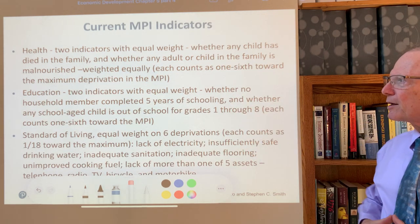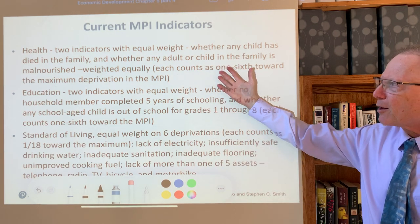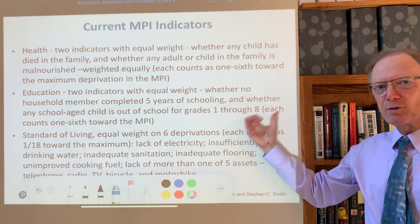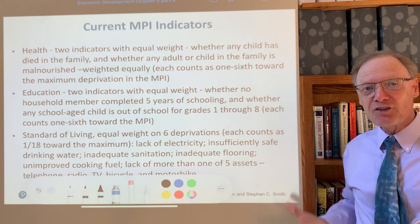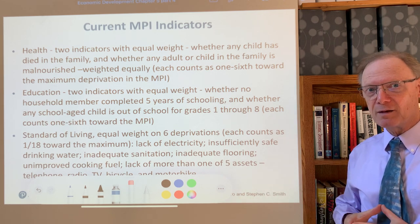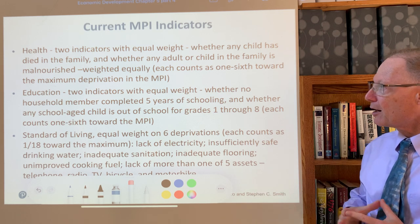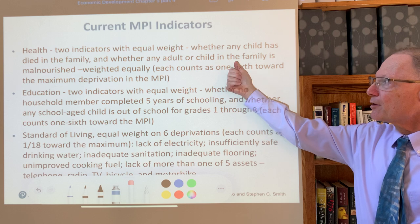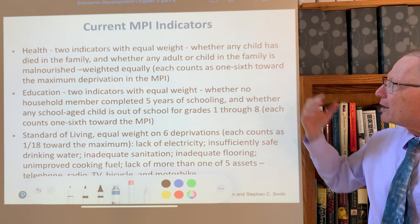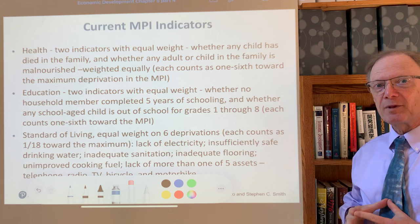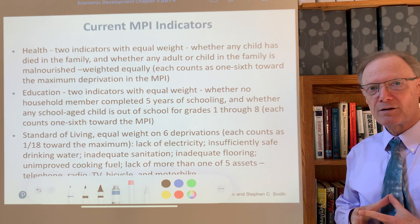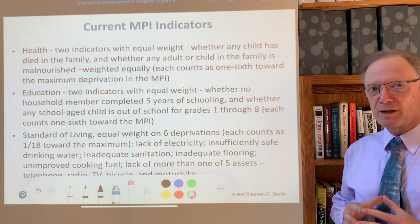The current MPI indicators in health: there are two indicators, each with equal weight, so we're looking at people living in a family. The first asks whether any child has died in this family — if so, the people in that family are deemed poor in that indicator, making them one-sixth deprived overall. The second is whether any adult or child in the family is malnourished. If that's the case, people in the family are determined to be multidimensionally deprived in that indicator.